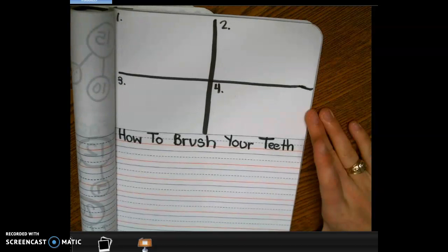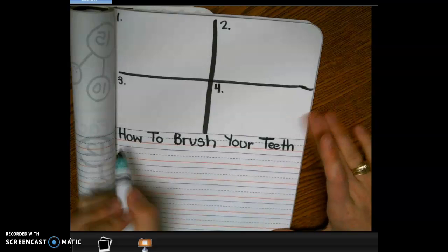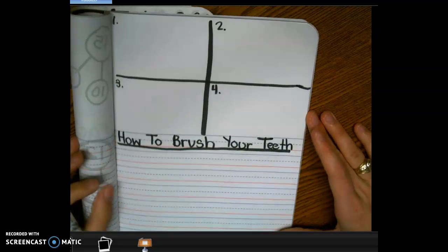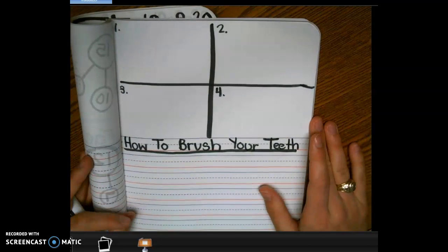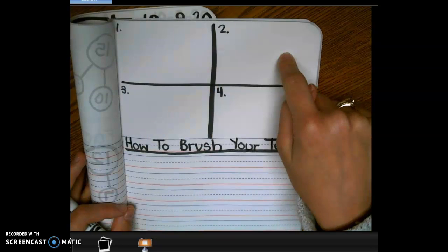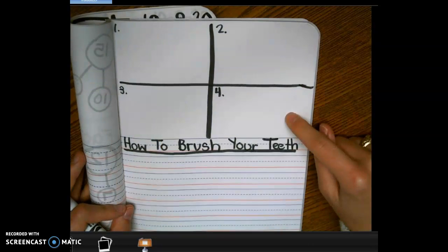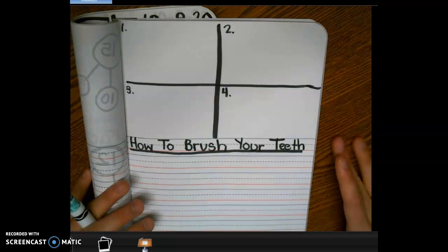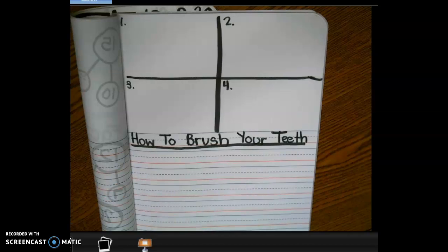So, how to brush your teeth. And then we're going to need to underline this because it's our title of our paper. So, go ahead and set up your journal like this, and then I want you to draw and label the four steps of how to brush your teeth in your journal. You'll have about 15 minutes to do that, so go ahead and get started.